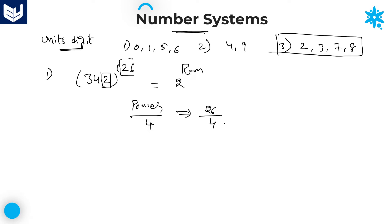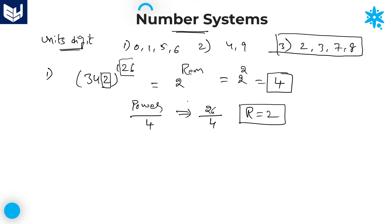26 divided by 4: the remainder is 2, because 4 × 6 = 24, and 26 − 24 = 2. Now substitute that remainder: 2 power 2 = 4. This is the required units digit. If any number ending with 2 has this power value, the required units digit is 2 power remainder, and since the remainder is 2, the answer is 4. Let me explain one more example: 743 to the power of 635.